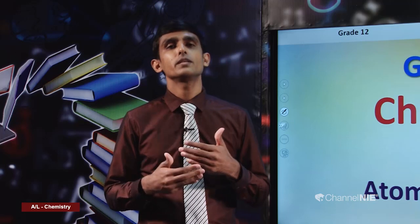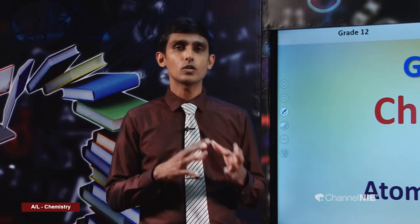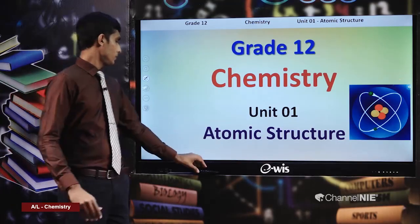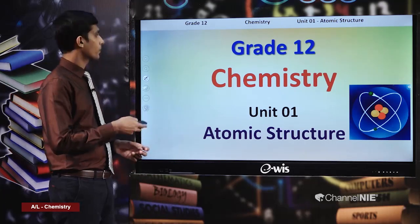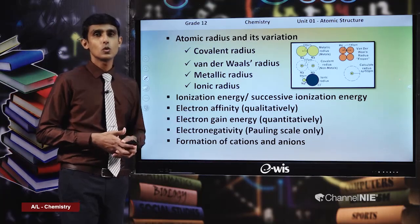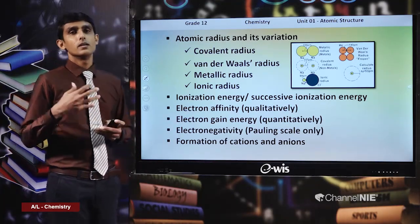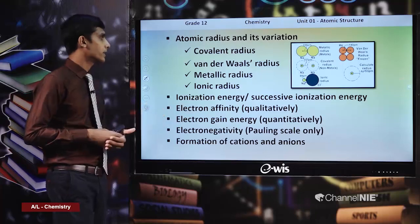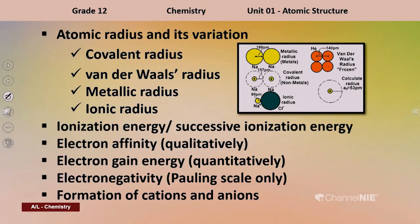Today we are going to study the trends of the properties of the elements when you move across a period of the periodic table or when you move down a particular group. According to the syllabus, you are supposed to know about atomic radius and its variation, ionization energy, electron gain energy, and electronegativity. Those are the main properties.